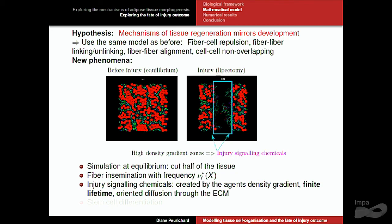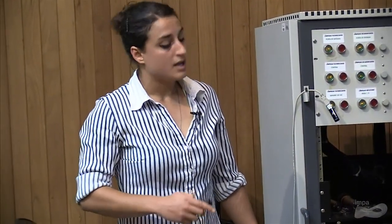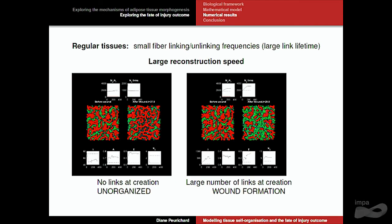These chemicals are created on the border of the wound with the same rules as fibres, and they have a finite lifetime. They diffuse through the tissue on the fibre network and disappear as fibres repopulate the wound and the gradient drops to zero. Only then can adipocytes differentiate, waiting for the chemicals to disappear before appearing.